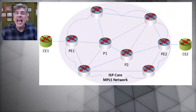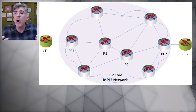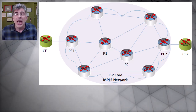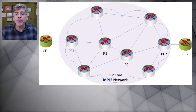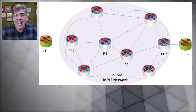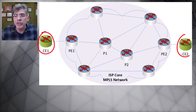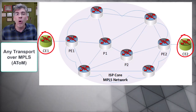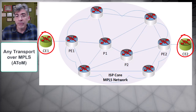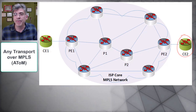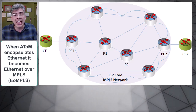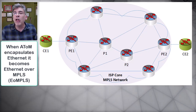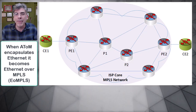MPLS is an extremely versatile data-carrying technology that is able to encapsulate a wide range of network protocols including layer 2 and layer 3 protocols. In this video we'll be creating a point-to-point layer 2 VPN between two customers using Any Transport over MPLS (AToM), encapsulating Ethernet frames. When you use AToM to encapsulate Ethernet, this special case is called Ethernet over MPLS, or EoMPLS.